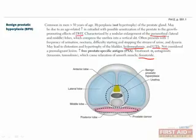Nevertheless, PSA is good for monitoring the efficacy of prostate cancer treatment and detecting potential recurrences. Other than finasteride, alpha-1 antagonists like terazosin and tamsulosin can also be used to treat BPH. The alpha-1 antagonists work by relaxing smooth muscle, thereby releasing pressure on the urethra.